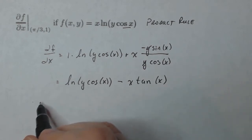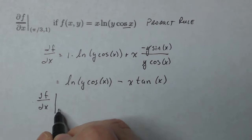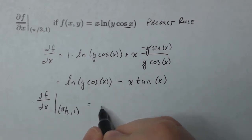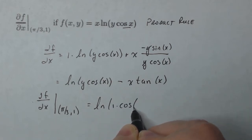Okay, so now the next part of my job is to take this derivative and insert into it the ordered pair pi over three comma one. So I put a one in for y and a pi over three in for cosine. I'm sorry, pi over three in for x.